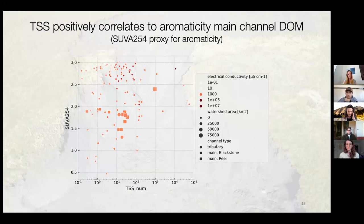One of the questions popping up from my side is: those slumps provide mineral surface area in the form of suspended solids that go into the stream, but how does that actually sort dissolved organic matter? There seems to be some sort of trend in what type of DOM is sorbed and what is not.